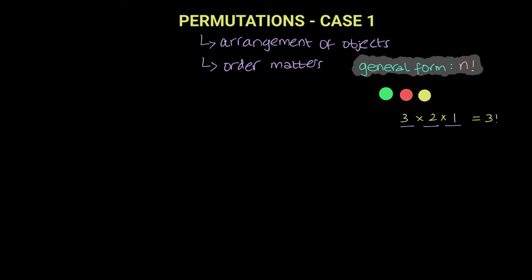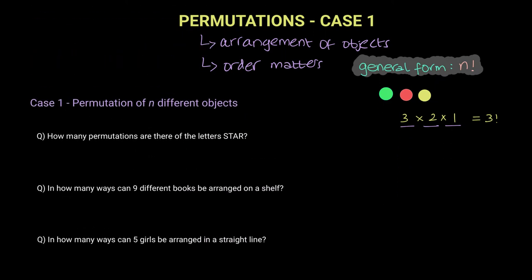So now let's come to case one. Case one is the simplest case, where it is the permutation of n different objects. So simply, we need to use n factorial to arrange n different objects.